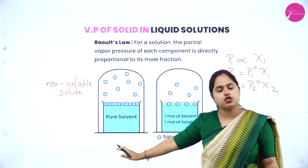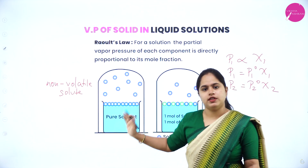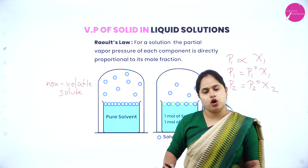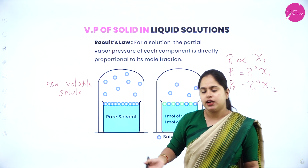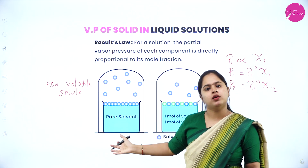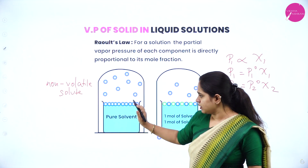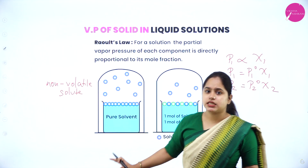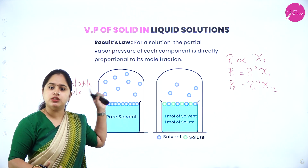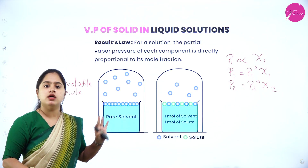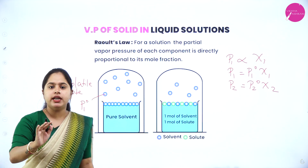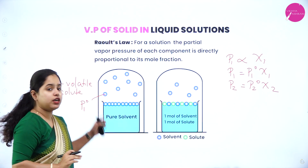Let us first consider only the pure solvent — we haven't added the solute yet. With only the pure solvent, the liquid changes into vapour phase and the pressure exerted by the vapour phase on the liquid is called vapour pressure. Considering water as the solvent, the pressure applied by the water vapour on the water is the vapour pressure, denoted P₁⁰.